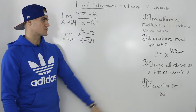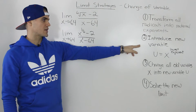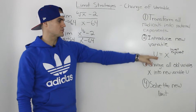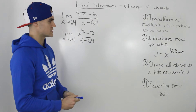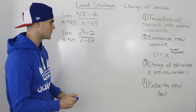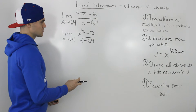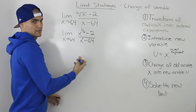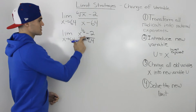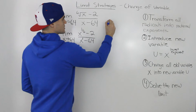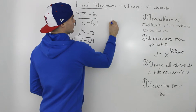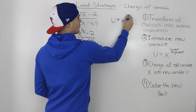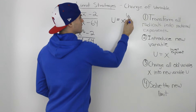Step 2: introduce a new variable u and let u equal x to the power of the lowest exponent in the limit. The two exponents we're working with are 1 over 6 and 1, and the lowest of those is 1 over 6. So we let u equal x to the power of 1 over 6.